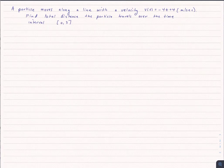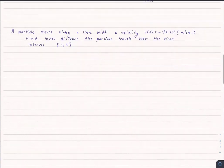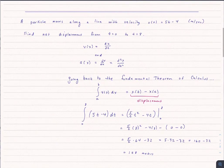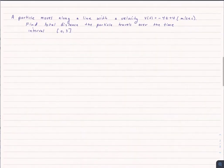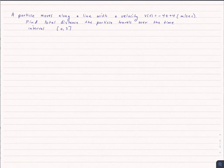This question seems awfully similar, but it's a little different. A particle moves along the line with the velocity v of t equals negative 4t plus 4. Find the total distance the particle travels over the time interval 0 to 3. Before, we were asked the net displacement. That's different than the total distance traveled. To see that, let me pull up a graph.